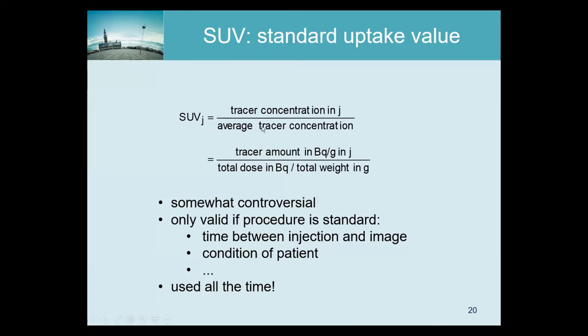So to measure that in practice, the average tracer concentration is usually determined from the injected dose. So we know that because we have measured it in the dose calibrator, and we divide by the total weight of the patient. Now the tracer concentration from the PET actually comes in becquerels per milliliter. So we assume that the density of the patient is one, and then we can swap the milliliters per gram. But of course, the whole thing is a bit sloppy.